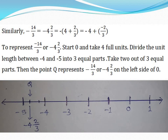Similarly, minus 14 by 3 equals minus 4 and 2 by 3, which equals minus 4 plus minus 2 by 3. To represent minus 14 by 3, start from 0 and take 4 full units to the left, then divide the unit length between minus 4 and minus 5 into 3 equal parts. Take 2 out of 3 equal parts, then point Q represents minus 14 by 3 on the left side of 0.